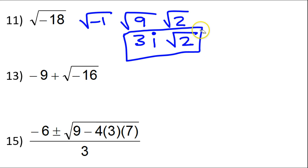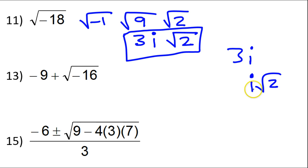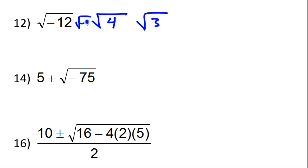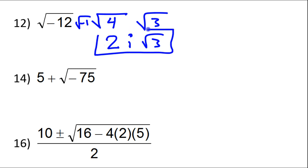Notice how i works in terms of position. If you just have a number, like 3, the i goes to the right. If you have a radical, like the square root of 2, then the i goes to the left — i radical 2. If you have both, like 3 and a radical 2, then the i goes in the middle. As soon as you see that negative under the radical, you know we're going to have an i. Looking at 12, think 4 times 3 — square root of 4 times the square root of 3. We've got that square root of negative 1, so that's going to be 2 radical 3, and this negative becomes i. So, 2i radical 3.